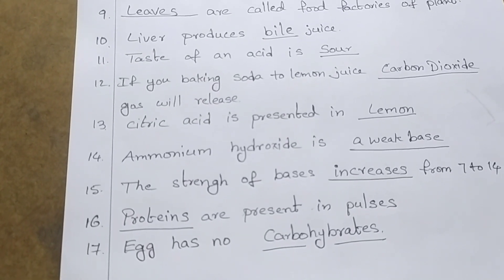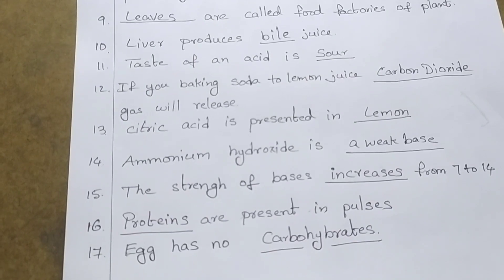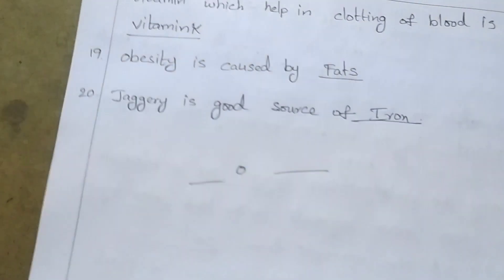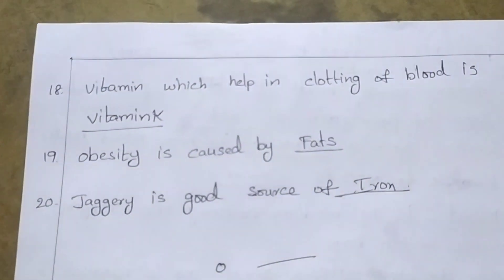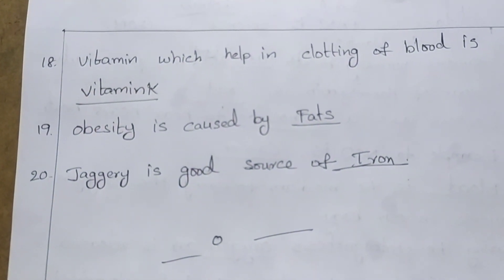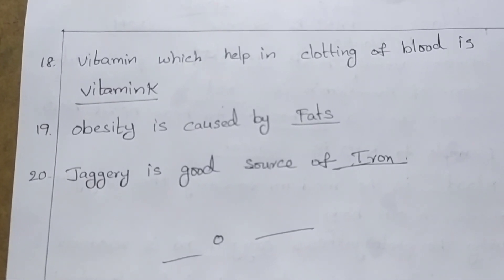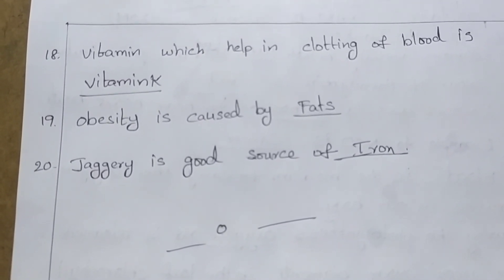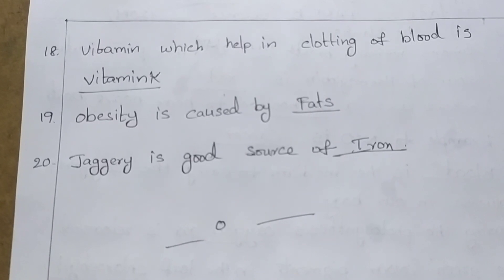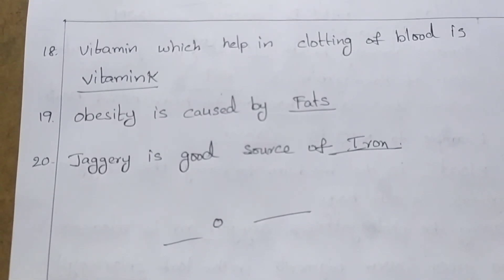Citric acid is present in lemon. Ammonium hydroxide is a weak base. The strength of bases increases from 7 to 14. Proteins are present in pulses. Vitamin K helps in clotting of blood. Obesity is caused by fats. Jaggery is a good source of iron. Okay, thank you so much.